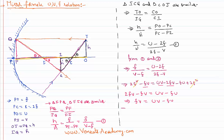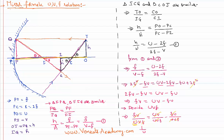Simplifying and dividing the entire equation by uvf, we arrive at the mirror formula: 1/v + 1/u = 1/f. Thank you for watching — keep coming back for more and more video lessons. Thank you.